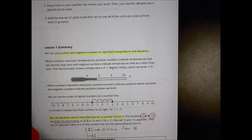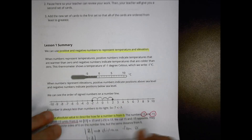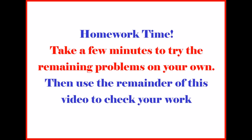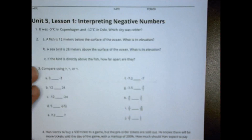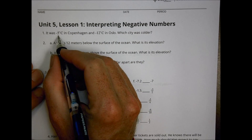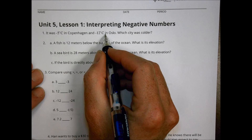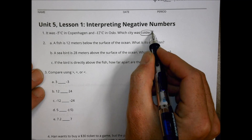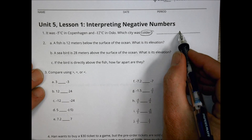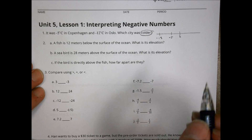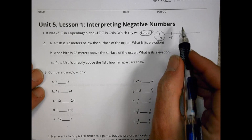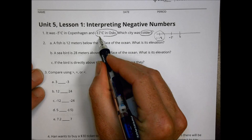Now let's take a look at tonight's homework. It was negative 5 degrees Celsius in Copenhagen and negative 12 degrees Celsius in Oslo — which city was colder? Thinking about a number line, negative 5 is here and negative 12 is further down. Colder means further away from zero, and 12 is further from zero, so Oslo is the coldest temperature.